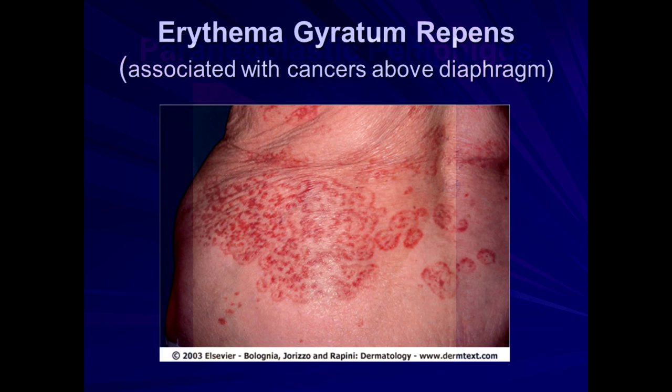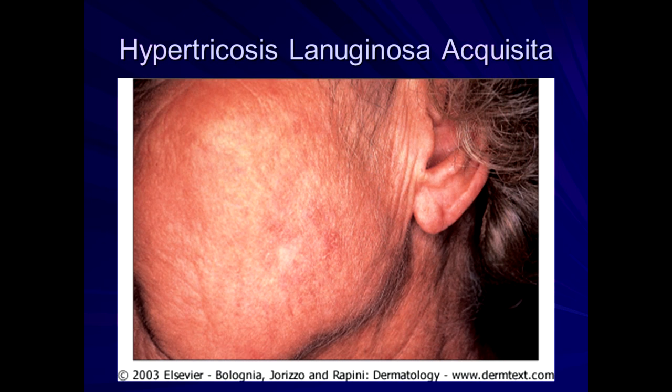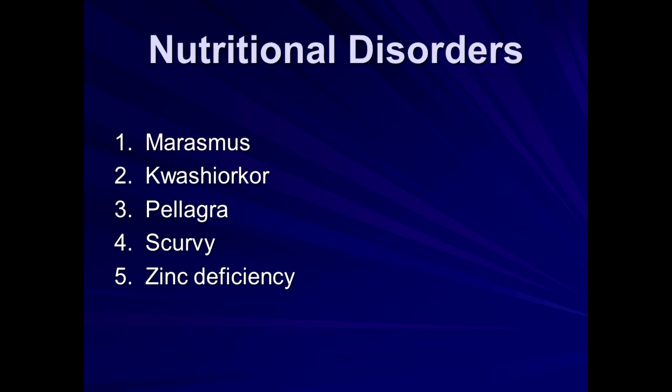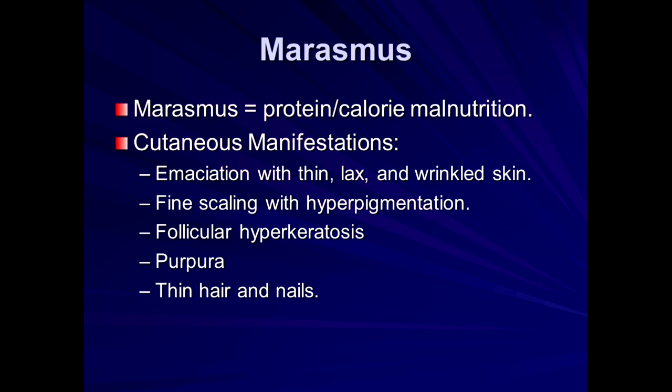Erythema gyratum repens may be associated with a variety of different underlying malignancies, though very rarely seen. Nutritional disorders — in the United States less common but not impossible: marasmus, where you have a caloric deficit; kwashiorkor, where you have a true protein deficit; pellagra, scurvy, and zinc deficiency — all need to be remembered. With marasmus patients are truly emaciated; kwashiorkor, from decreased protein, can present with desquamation, scaling, and bloating.